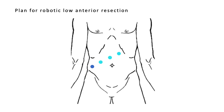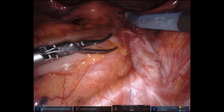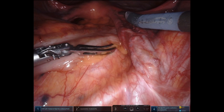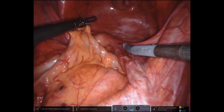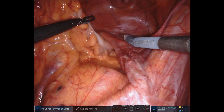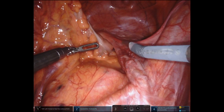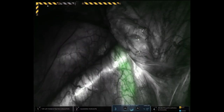The plan was for a robotic low anterior resection using the da Vinci XI platform. Our port placement is shown here: four robotic ports in diagonal orientation, a 12-millimeter port in the right lower quadrant for stapling shown in dark blue, and an assist port in the right upper quadrant shown in green with a pre-planned fan and steel extraction site. To help with intraoperative identification, cystoscopy was performed at the start of the case with indocyanine green injected into each ureteral orifice. The total dose was 12.5 milligrams of ICG reconstituted in 5 mLs of saline followed by a 5 mL saline flush.